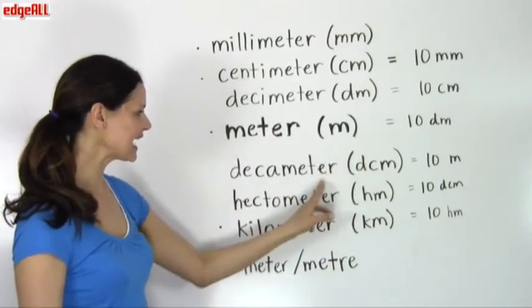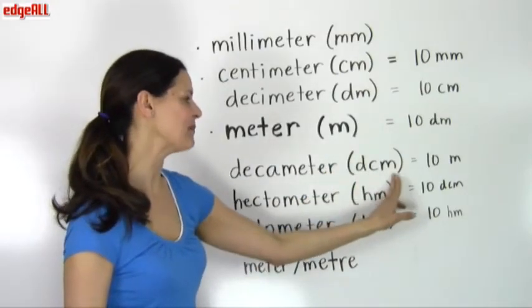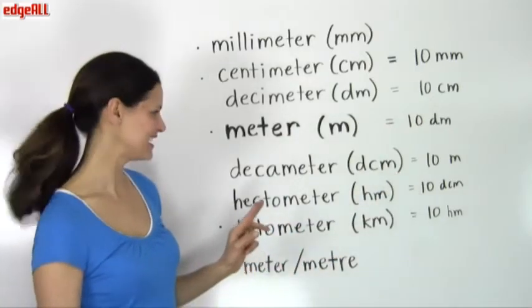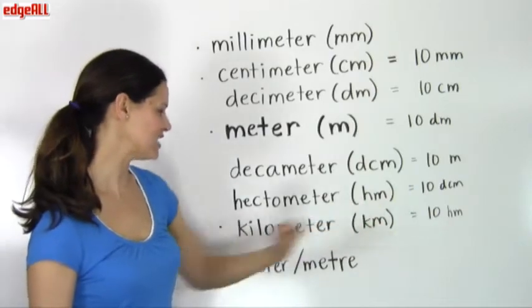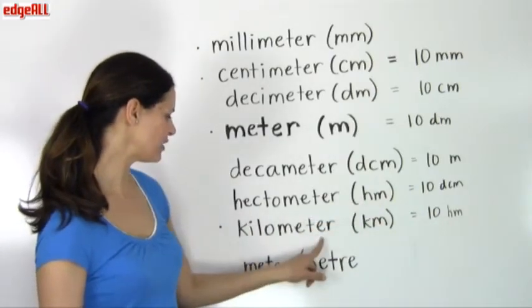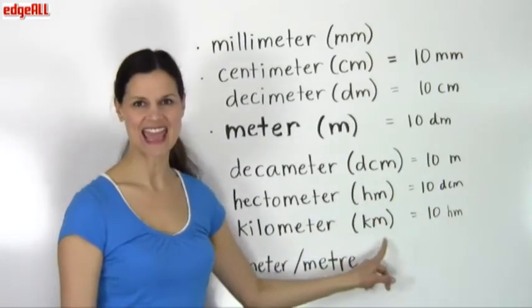And then for decameter, a DCM. This is the only one with three letters in the abbreviated version. Hectometer, HM, and kilometer or kilometre, KM.